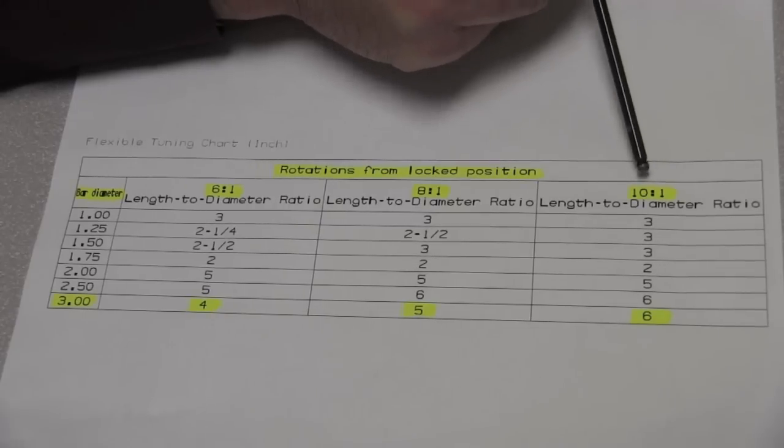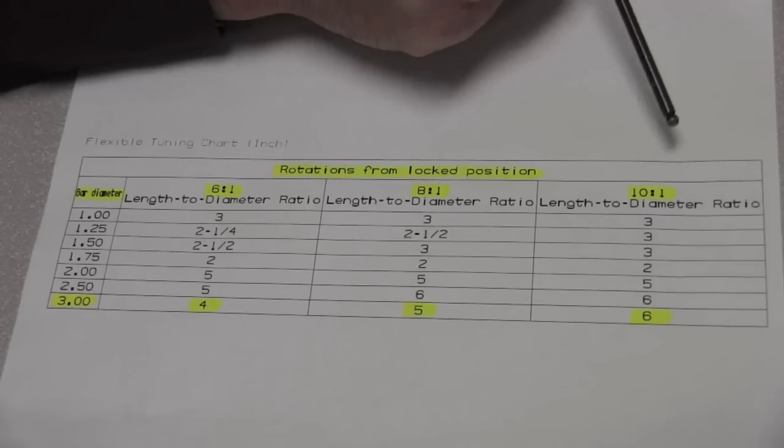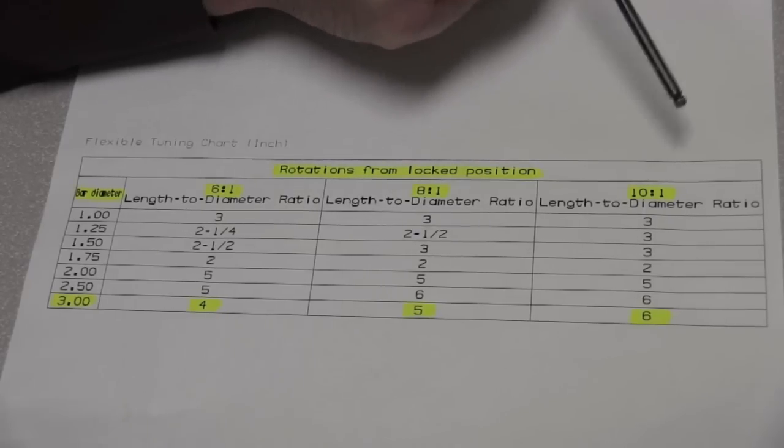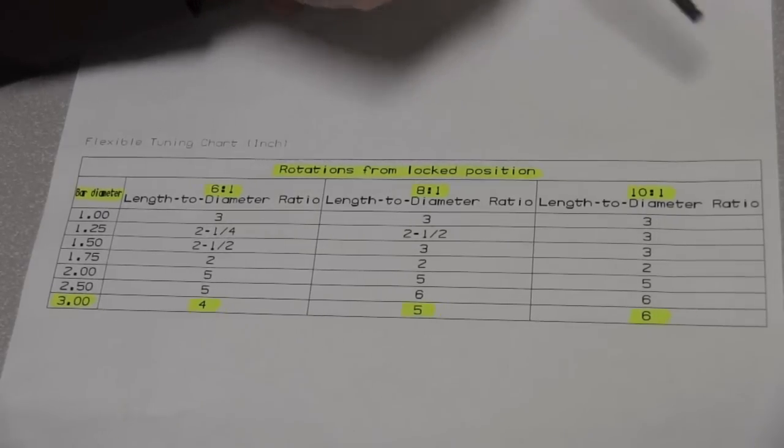So for example, a 1 inch diameter bar will be set to cut 10 inches deep, 2 inch, 20 inches, so forth and so on.